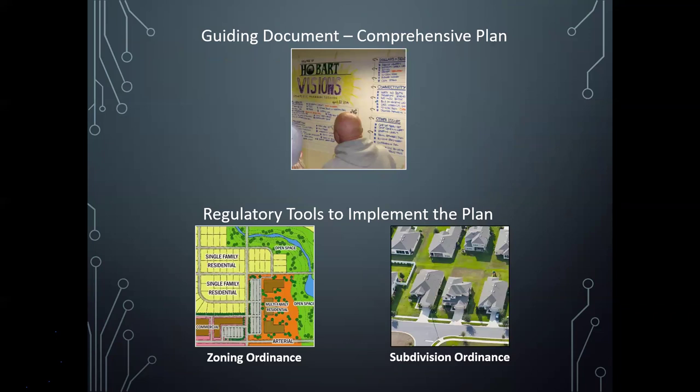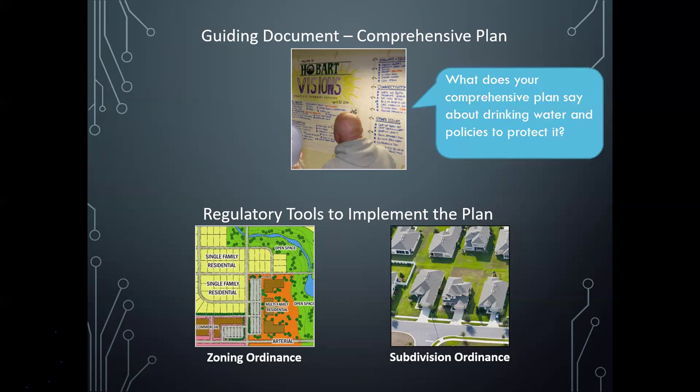Now we'll jump into the tools, starting with the comprehensive plan or other community plans. This is our guiding document — not a regulation, but it addresses what we want our community's future to look like in 20 years: what to keep the same, what to change, where we want new development to happen, and what types of development go where. A key question is what does your community's comprehensive plan say about drinking water quality and the policies in place to protect it.